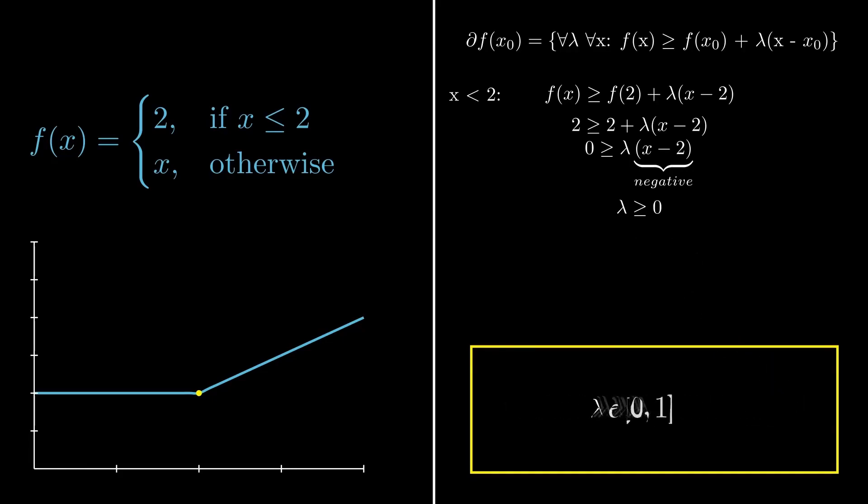If we combine these three conditions, we end up with the closed interval of 0 and 1. Which makes sense if we try to visualize the tangent lines.